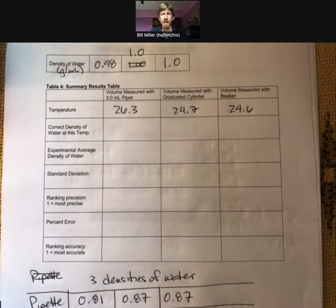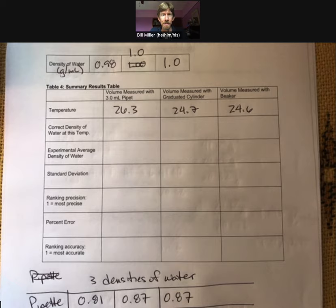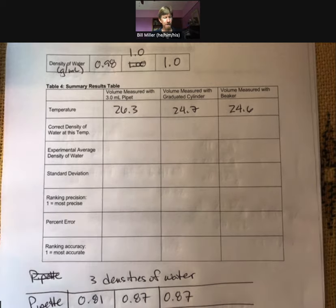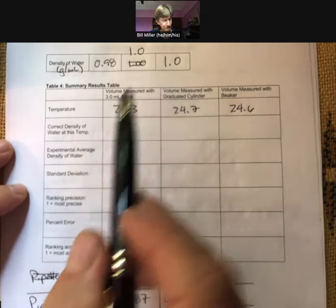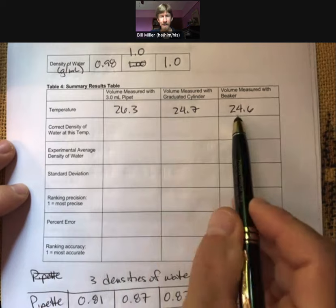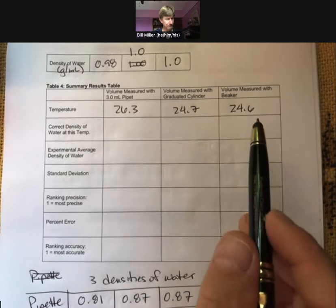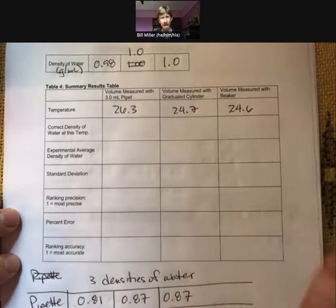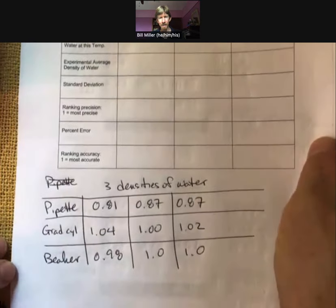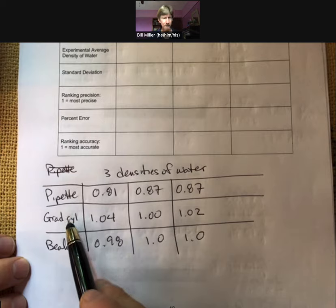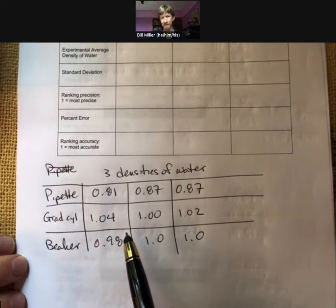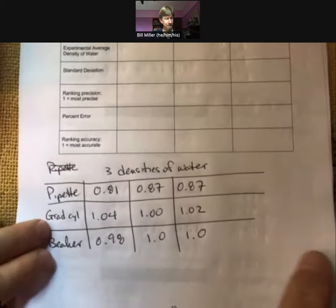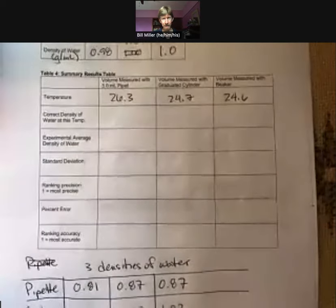This is going to be experiment one, basic techniques, table number four, the summary results table. I've done a little organizing here. I've done all my calculations for my density. I've transferred each of the temperatures from the previous tables into this table four. And then I've got down at the bottom here, just organized for the pipette, graduated cylinder, and beaker, each of my three densities. So I've done all those calculations. And let's go ahead and go through this table.